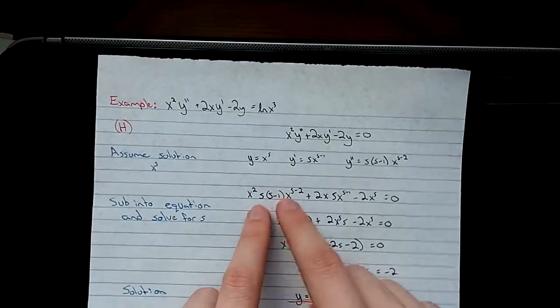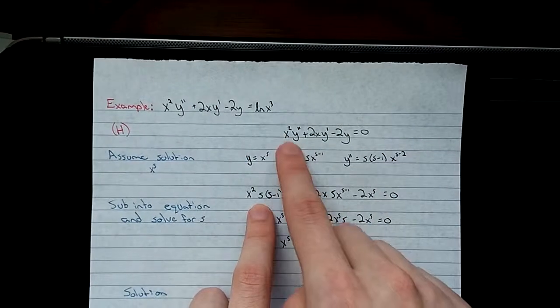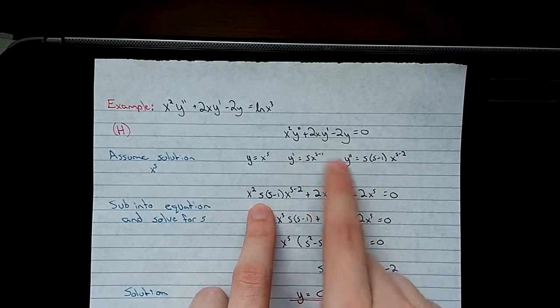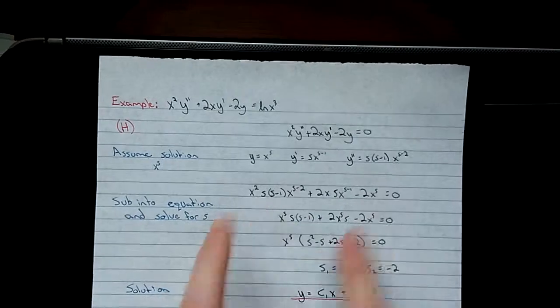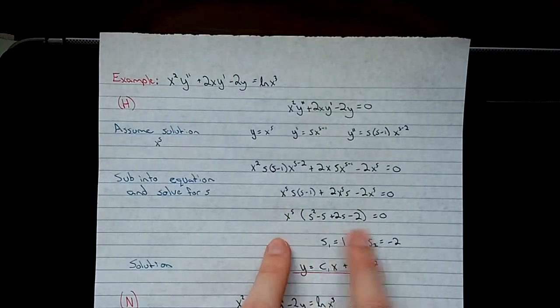We've taken our two derivatives here. And now all I've done here is just plug it in and write it back into here. So y for y, y prime for y prime, y double prime for y double prime. Right there.